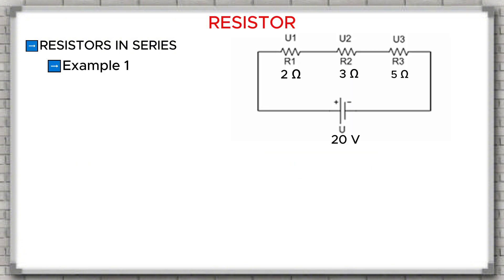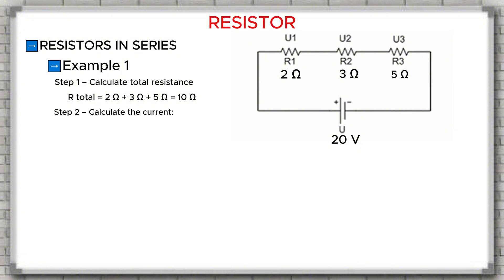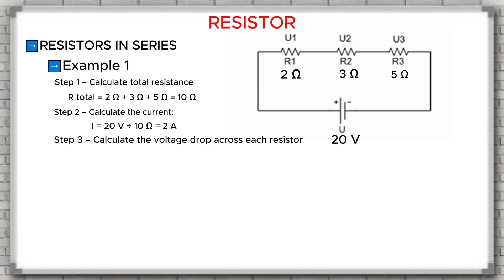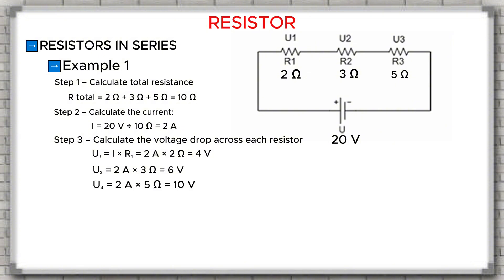Let's do a few examples so we can understand this more clearly. Example 1: Resistors R1 equals 2 ohms, R2 equals 3 ohms, R3 equals 5 ohms. Power supply: 20 volts. Step 1 — calculate the total resistance: R total equals 2 plus 3 plus 5 equals 10 ohms. Step 2 — calculate the current: I equals 20 volts divided by 10 ohms equals 2 amperes. Step 3 — calculate the voltage drop across each resistor: U1 equals 2A times 2Ω equals 4 volts; U2 equals 2A times 3Ω equals 6 volts; U3 equals 2A times 5Ω equals 10 volts. Conclusion: The larger the resistor, the greater the voltage drop. Here, R3 is the largest, so its voltage drop is also the largest.